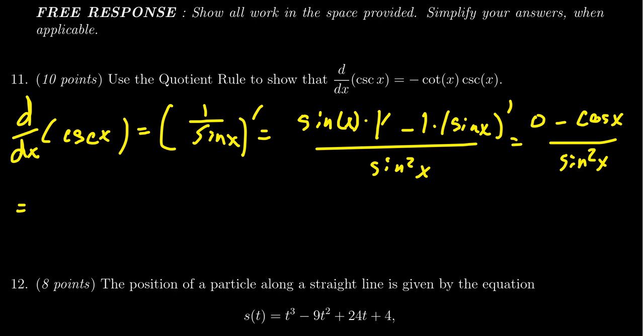And so this gives us negative cosine of x over sine squared of x. Now the rest of the problem is basically just a trigonometric identity. Notice where we have to get to. We have to get negative cotangent times cosecant. Well, cosecant is 1 over sine like we already observed. Cotangent is cosine over sine.